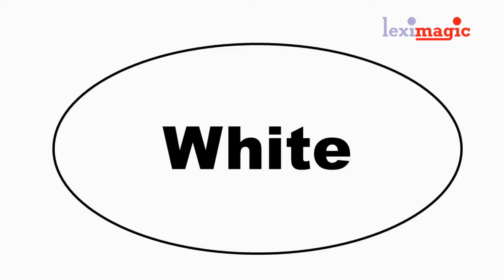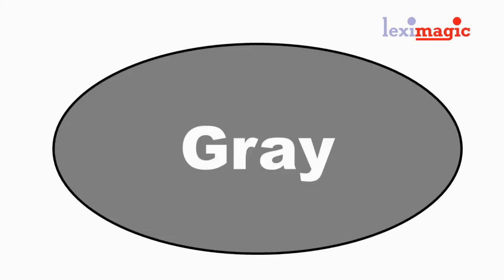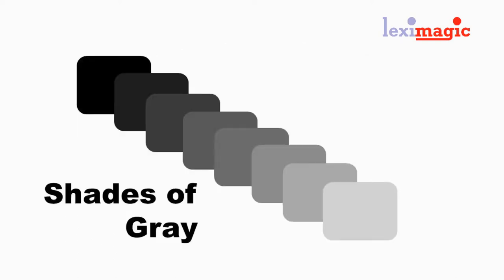We have white, black, and grey, which is a mixture of white and black. So between pure white and pure black, we can have many shades of grey.